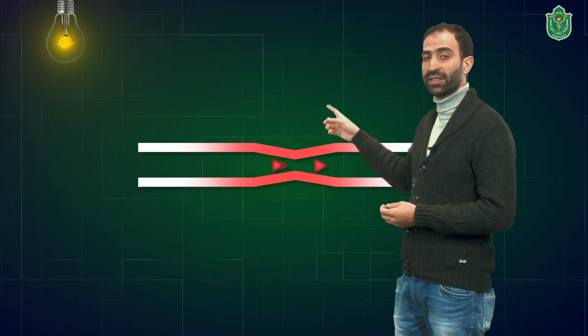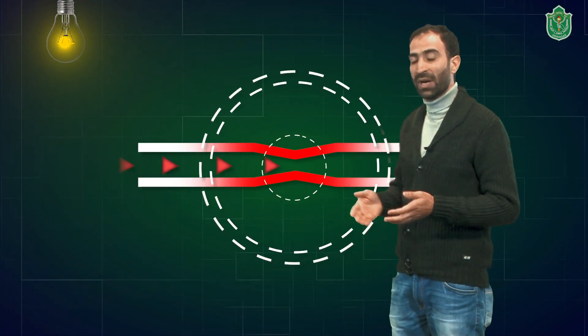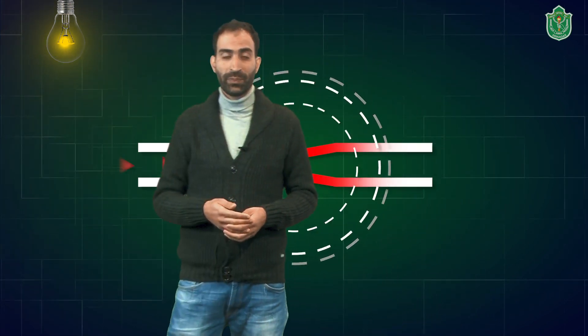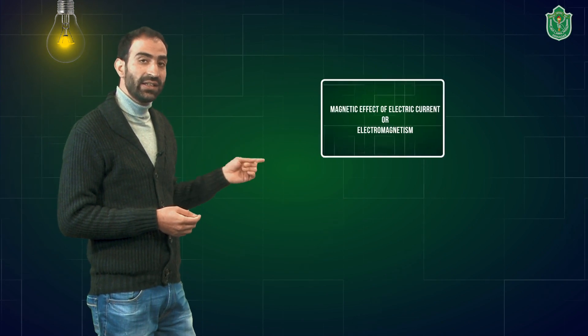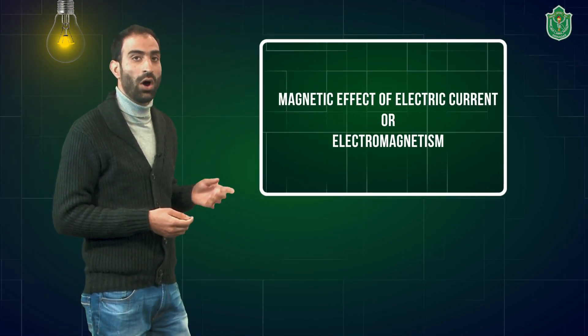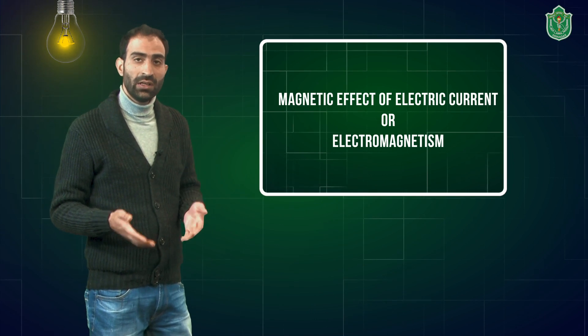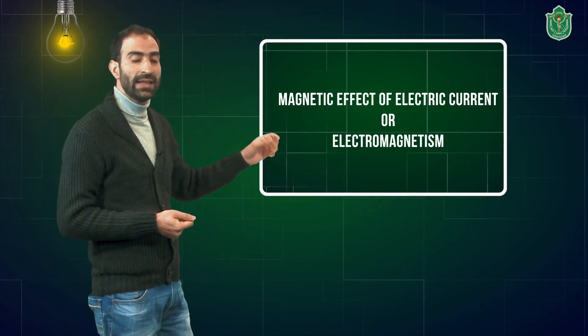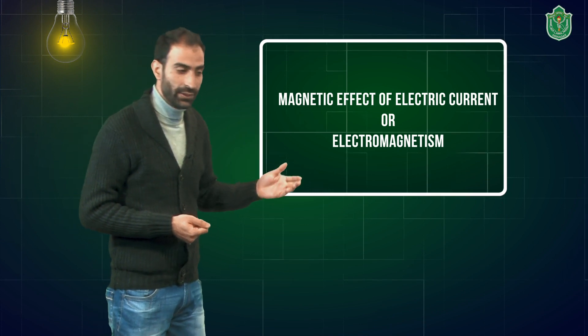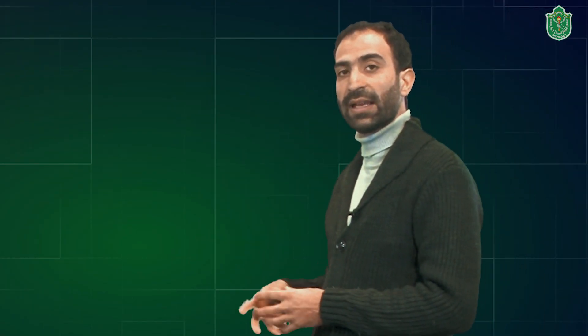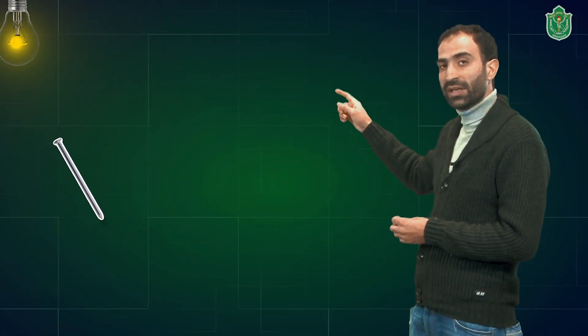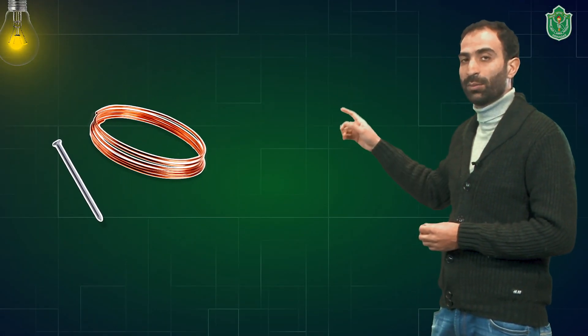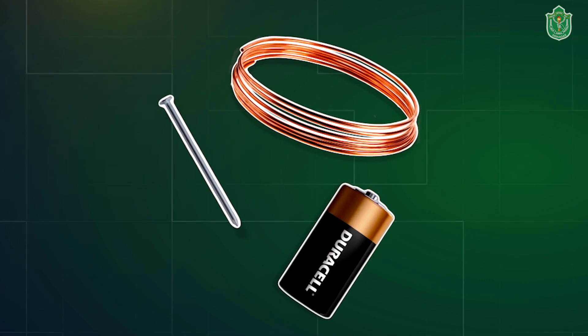Now let us understand another most important effect of electric current. Whenever electric current is passing through a conductor, it not only becomes hot but it also starts to behave like a magnet, and this effect is known as the magnetic effect of electric current, or electromagnetism. Let us try to understand this effect by making a simple electromagnet. The materials we are going to use are a simple nail, a copper insulated wire, and a small cell.